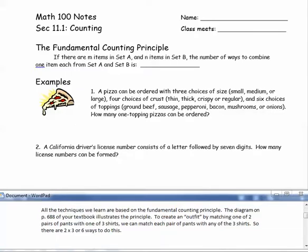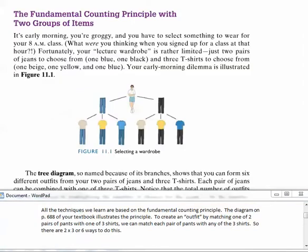All the techniques we learn are based on the fundamental counting principle. The diagram on page 688 of your textbook illustrates the principle. To create an outfit by matching one of two pairs of pants with one of three shirts, we can match each pair of pants with any of the three shirts, so there are two times three, or six, ways to do this. We multiplied.